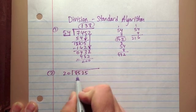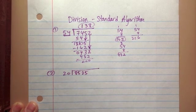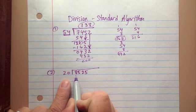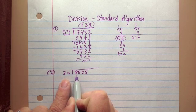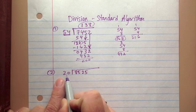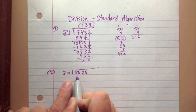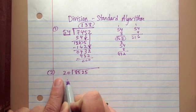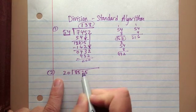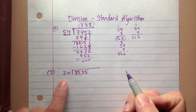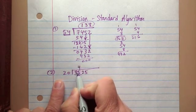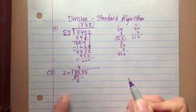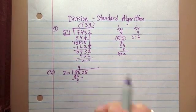Let's do 8,525 divided by 20. 20 is a friendly number to work with, so this might be a little bit easier. With the standard algorithm, you want to look at the first few digits and work with just those first. Can I divide 8 by 20? No. Can I divide 85 by 20? Yes — how many 20s go into 85? It would be 4, because 4 times 20 is 80, and 85 minus 80 gives me 5. But I still have a 2 and a 5 — two more digits.